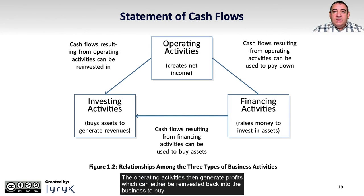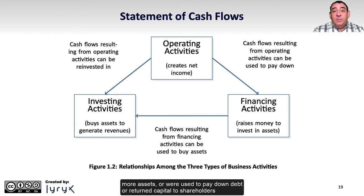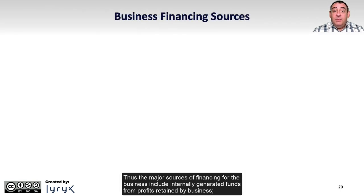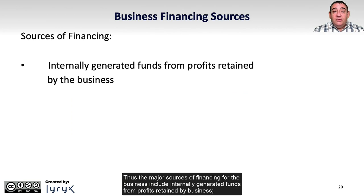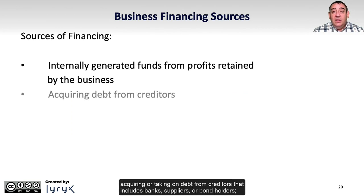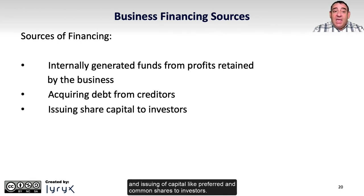The operating activities then generate profits, which can either be reinvested back into the business to buy more assets, or used to pay down debt or return capital to shareholders. Thus, the major sources of financing for the business include internally generated funds from profits retained by the business, acquiring or taking on debt from creditors that includes banks, suppliers, or bondholders, and issuing capital like preferred and common shares to investors.